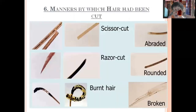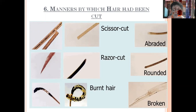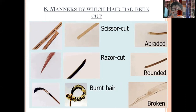We also take note of the manner in which the hair was cut. A scissor cut appears very clean and parallel. If abraded, it looks as if it was pulled like a wire. A razor cut is slanted, while a scissor cut is parallel. A round tip indicates the hair has not been cut for a long time. A burned appearance and a broken or irregular shape indicate those respective conditions.